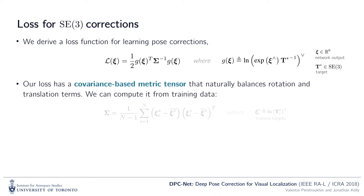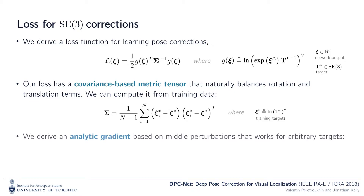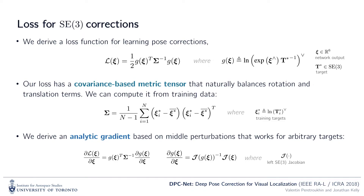Our loss naturally balances rotational and translational components through a metric tensor computed from training data, which obviates the need for any scalar tuning parameters. We further derive an analytic gradient based on middle perturbations of the SE(3) manifold for efficient backpropagation.